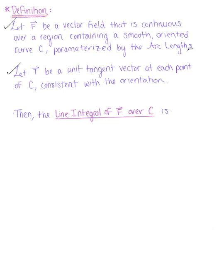Then the line integral of the vector field F over C is defined as the integral over C of the dot product of the vector field and the unit tangent vector with respect to arc length.